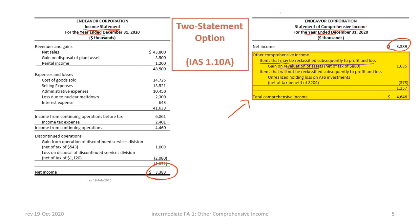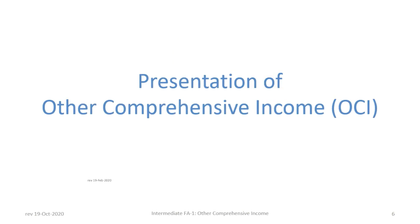There are other items, shown here in green, that will not be reclassified subsequently to profit and loss. An example is the unrealized holding gains and losses on available-for-sale investments, also known as fair value through OCI investments. The OCI section must be split into these two subcategories if applicable items exist. If only one classification applies, then only that section needs to be shown. The remainder of this tutorial will focus only on the OCI section of the statement of comprehensive income.